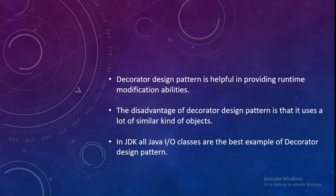Due to that, the object capability or object functionality will be enhanced. The only disadvantage is that a huge number of similar kinds of objects — called decorator type objects — will be created. The best example in Java JDK is basically the Java IO classes. All the Java IO classes are basically using the decorator design pattern.